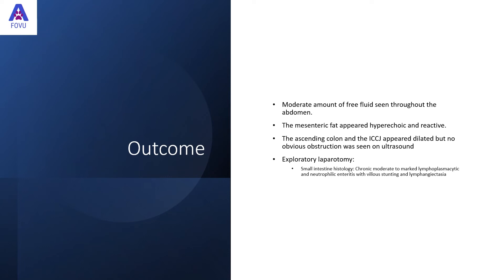In summary, we found a moderate amount of free fluid seen throughout the abdomen. The mesenteric fat appeared hyperechoic and reactive. The ascending colon and the ileocaecocolic junction appeared a bit dilated, but no obvious obstruction was seen on ultrasound. An exploratory laparotomy followed, and histology samples taken from the small intestine found chronic moderate to marked lymphoplasmacytic and neutrophilic enteritis with villus stunting and lymphangiectasia.